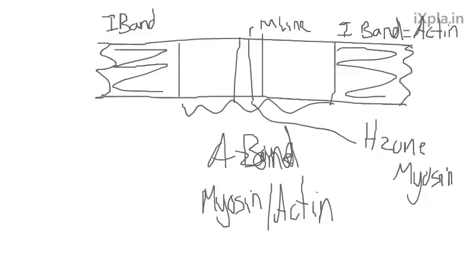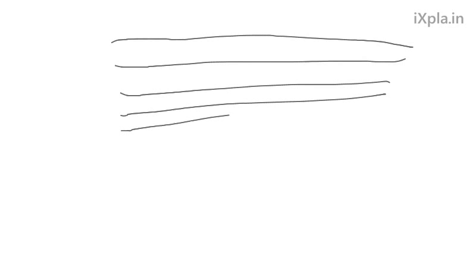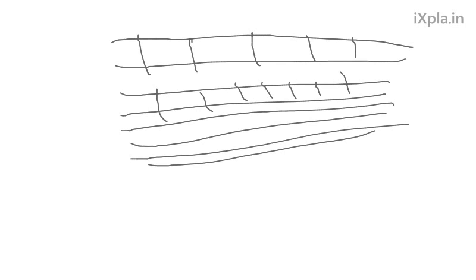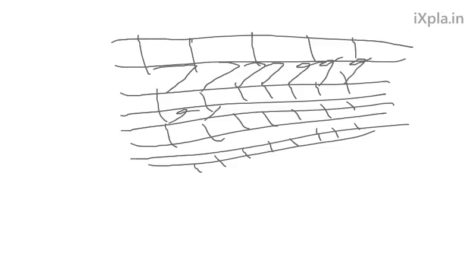During muscle contraction, these bands slide between each other. A muscle is thousands of fibers stacked on top of each other. Each fiber has sarcomeres, and each sarcomere has myofilaments — actin and myosin. During muscle contraction, myosin essentially pulls actin towards itself. Myosin attaches to actin and pulls it — this is called the sliding filament theory.